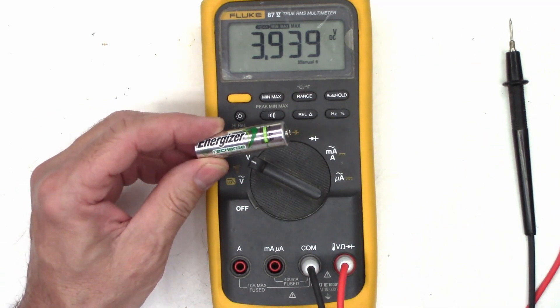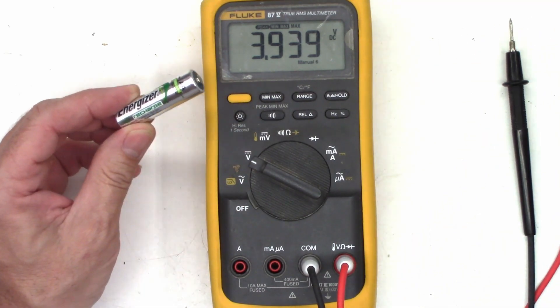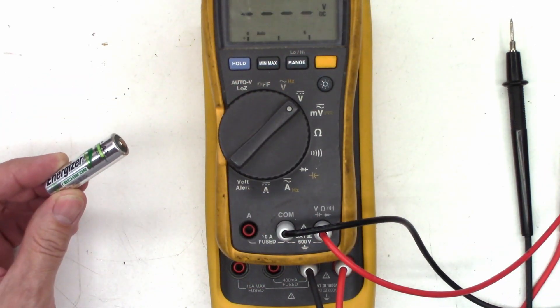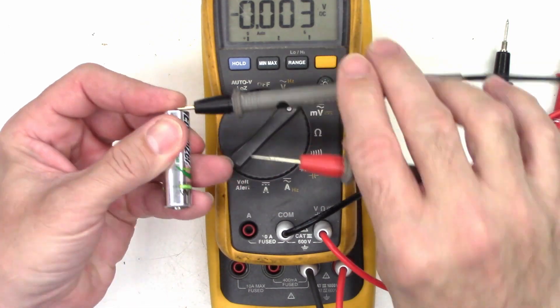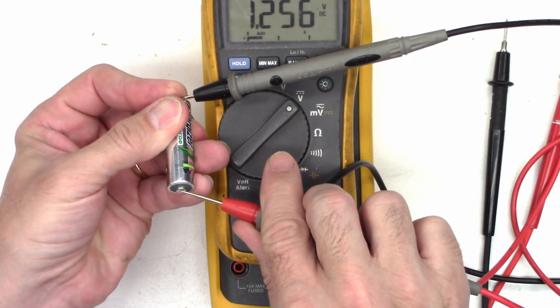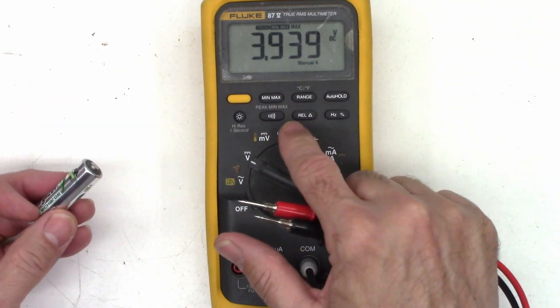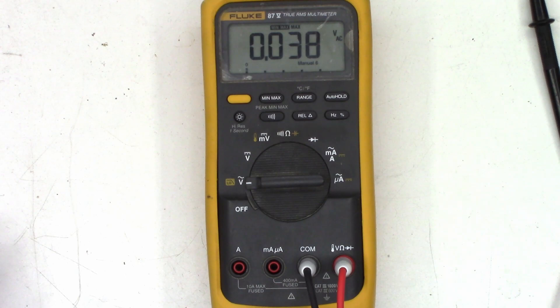Maybe 1.3 volts at the most. Let's get another Fluke out here. We'll put this one on volts. And we see 1.256 volts.